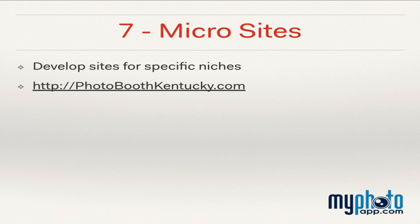Method 7: Microsites. Microsites are small, single function websites. For example, you may not want to place boudoir photos on your high school senior photography website, so you can create a My Photo App micro website dedicated to boudoir. PhotoboothKentucky.com is an example of such a micro website — it is a website dedicated to the photo booth division of Cook Designer Portraits. With the ease of creating websites in My Photo App, microsites should be a common practice for any photographer who has specialties.